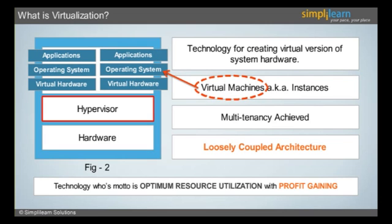A hypervisor is a type of software which is implemented in a machine to create and manage instances. Thus, it is also called a Virtual Machine Monitor or VMM. Examples of hypervisors are VMware, ESX as shown in Figure 2, Citrix, etc.